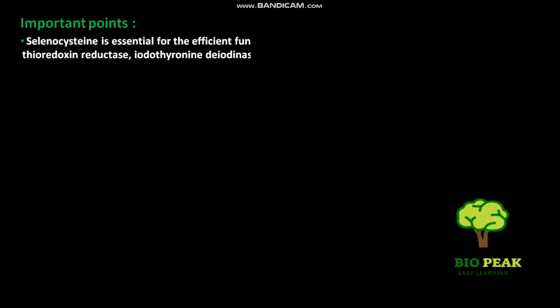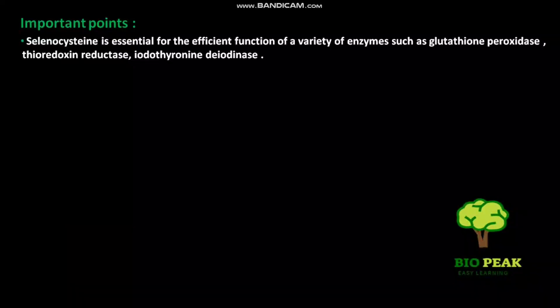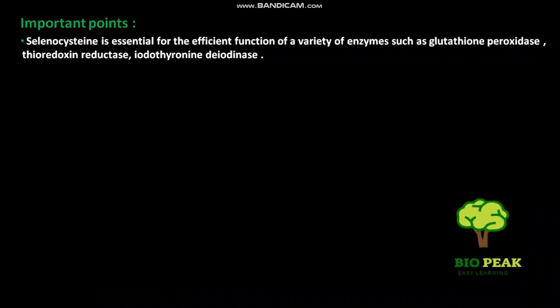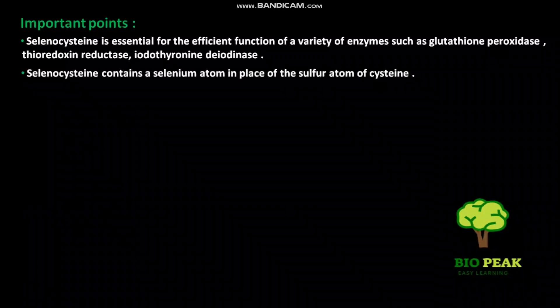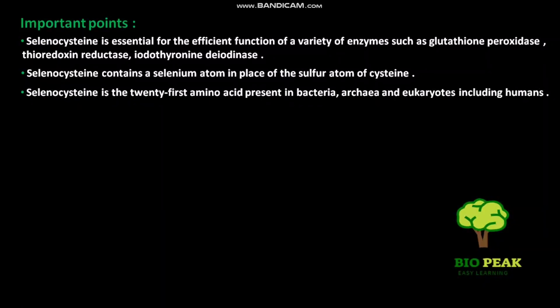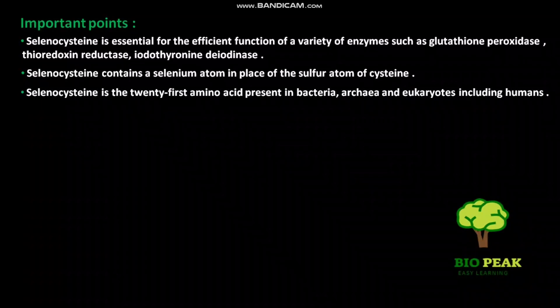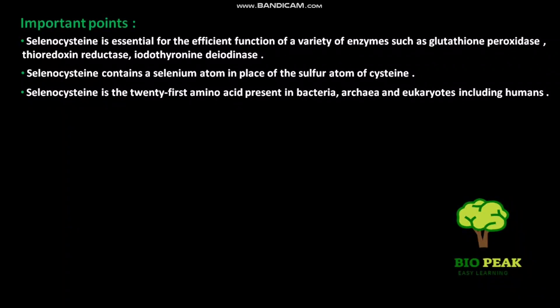Some important points: selenocysteine is essential for the efficient function of a variety of enzymes such as glutathione peroxidase, thioredoxin reductase, and iodothyronine deiodinase. Selenocysteine contains a selenium atom in place of the sulfur atom of cysteine. It is considered the 21st amino acid and is present in bacteria, archaea, and eukaryotes including humans.